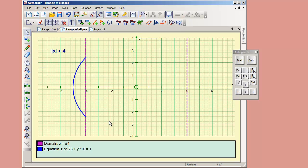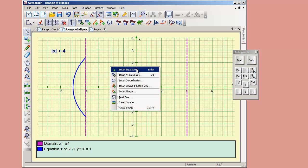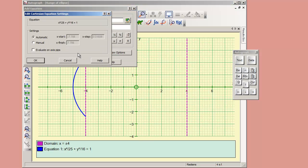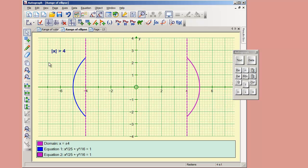Now in order to get this one, we're going to have to draw the function again. Enter an equation. The startup options now are going to be manually from 4 to 5. So that's one way of doing that.